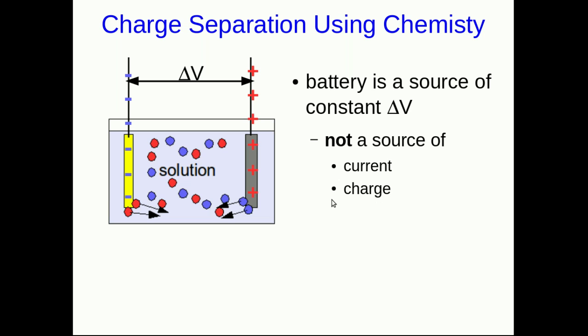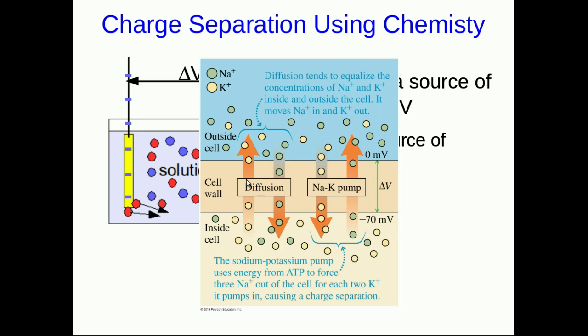Now humans making batteries aren't the only ones to have ever figured this out. Charge separation using chemistry goes on all the time in cells. And so for example at cell membranes there are these things called ion channels which cells use to pump different ions across their membranes to set up a potential difference across the membrane.